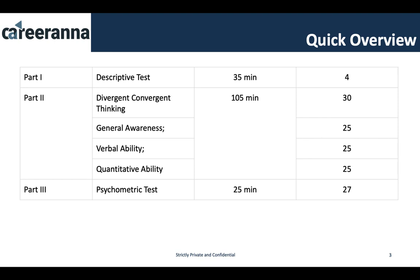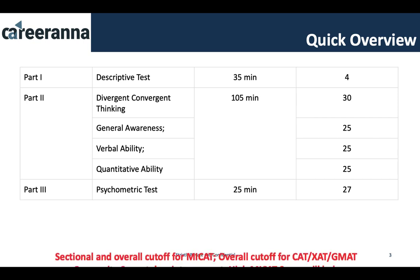Part 2 needs to be completed in 105 minutes. Part 3 is a psychometric test with a time limit of 25 minutes, and you need to attempt all the questions. The number of questions in the psychometric section varies from year to year — last year there were 27 questions, and on average 25 to 32 questions appear.